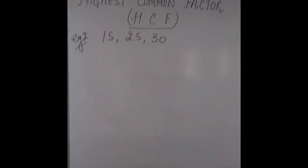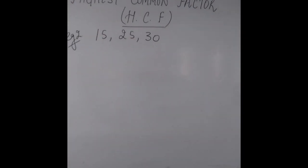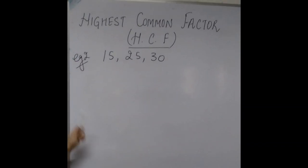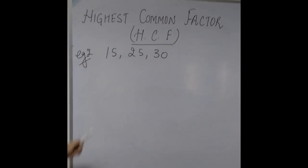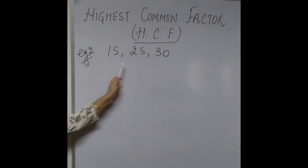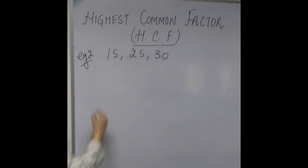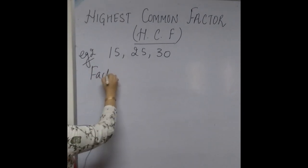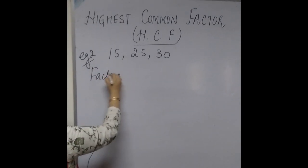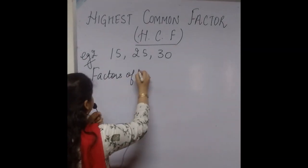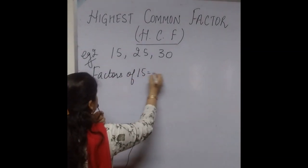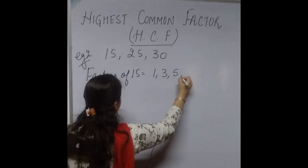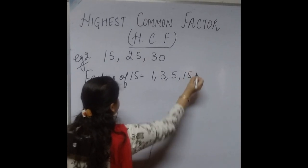Now let us come to another example in which we have to find the HCF of 3 numbers: 15, 25, and 30. So let us first of all find the factors of 15. Factors of 15 are 1, 3, 5, and 15.